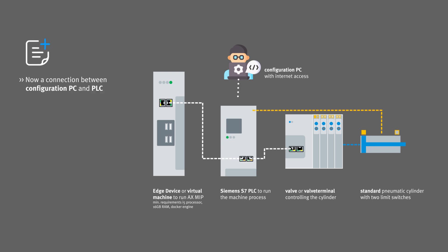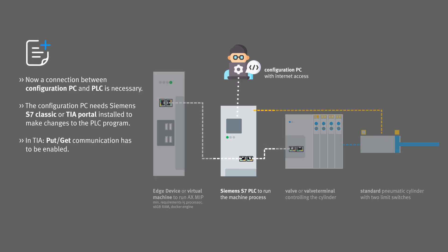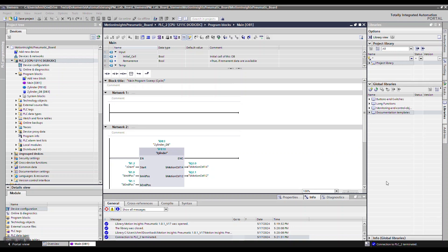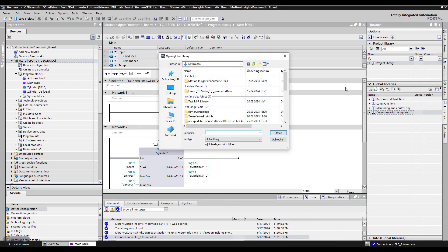Now establish a connection to your PLC. In TIA Portal, add the MIP library from Festo to the global libraries.